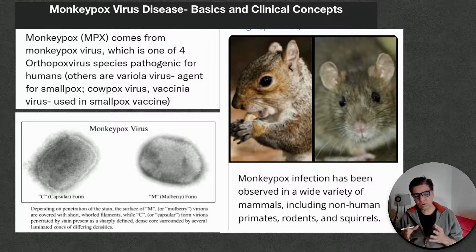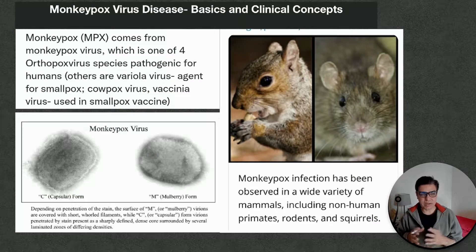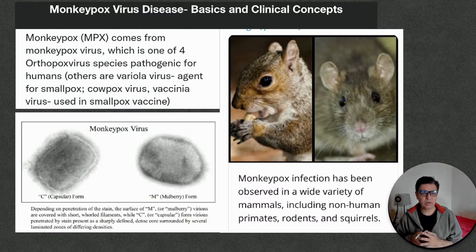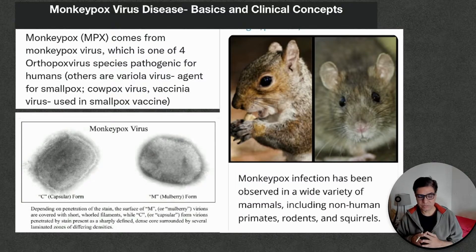Monkeypox virus is one of the four orthopoxviruses and causes pox infection. There are different types of pox infections — one is the historical smallpox virus disease, which has now been eradicated from the world. The last case occurred in the late 1970s, and the WHO finally declared the world free of smallpox. Back in the 1950s–70s, it used to cause a lot of infections worldwide with high mortality, and even survivors were left with significant disfigurement from residual facial scars.